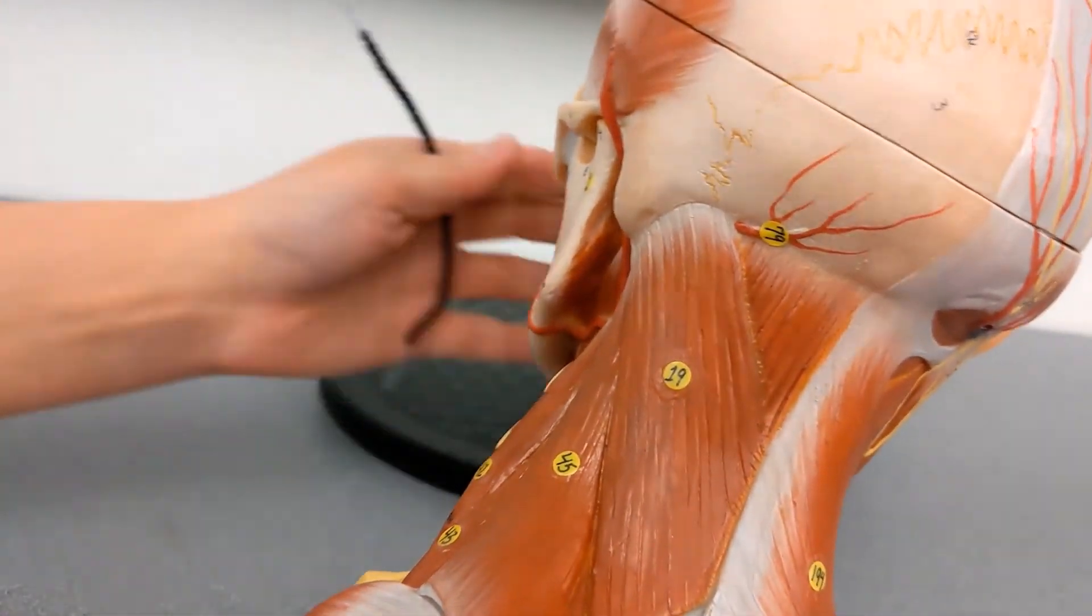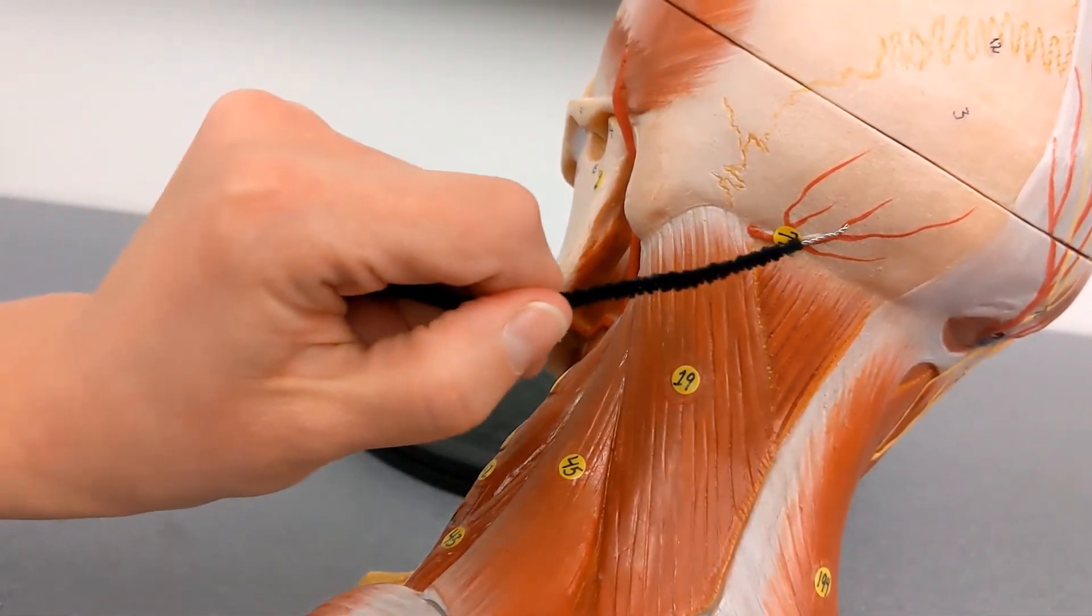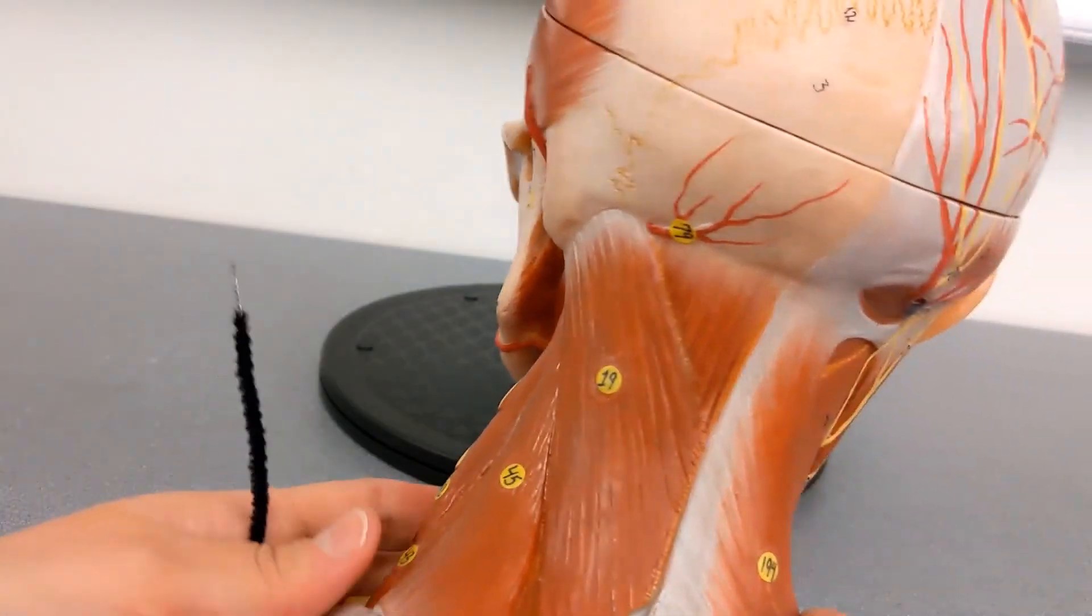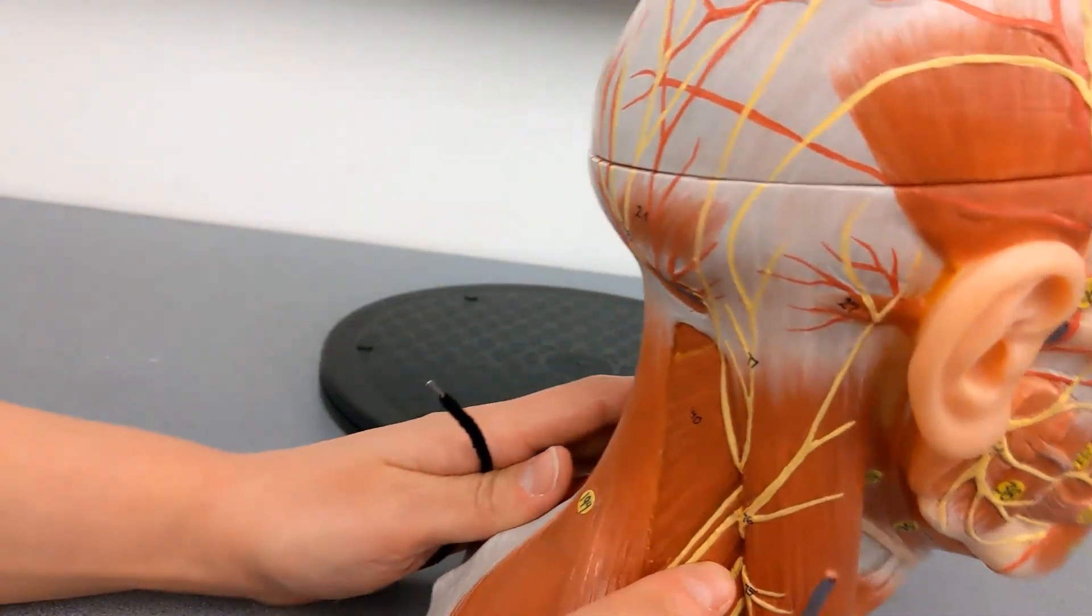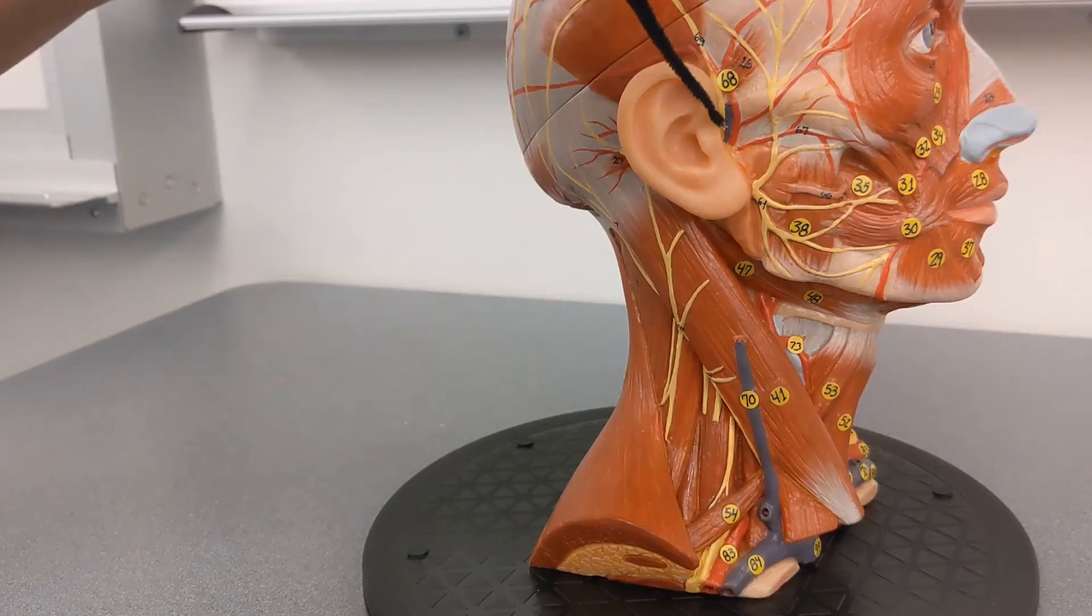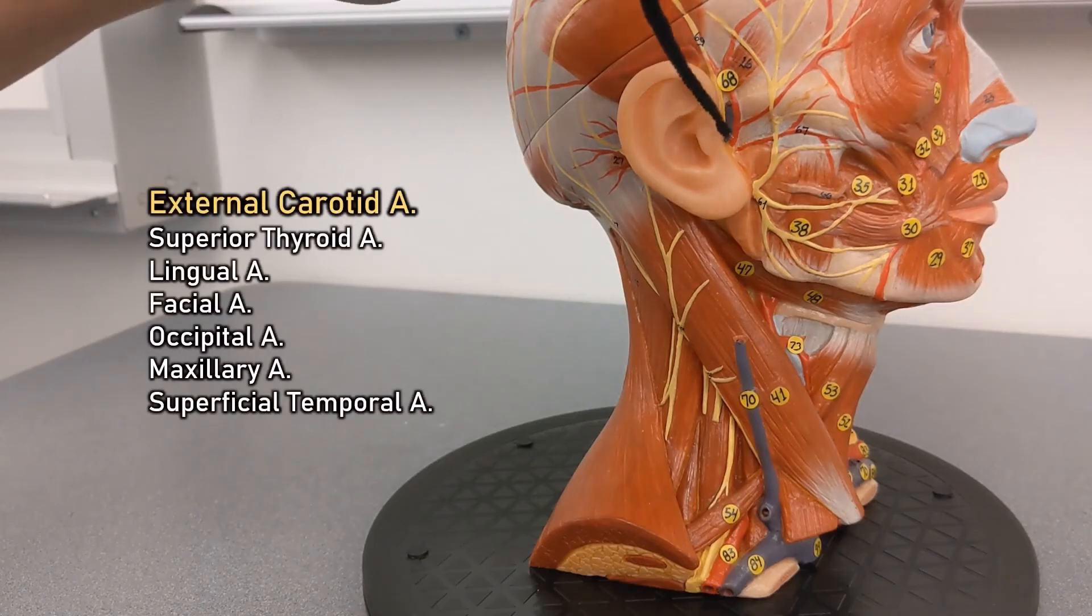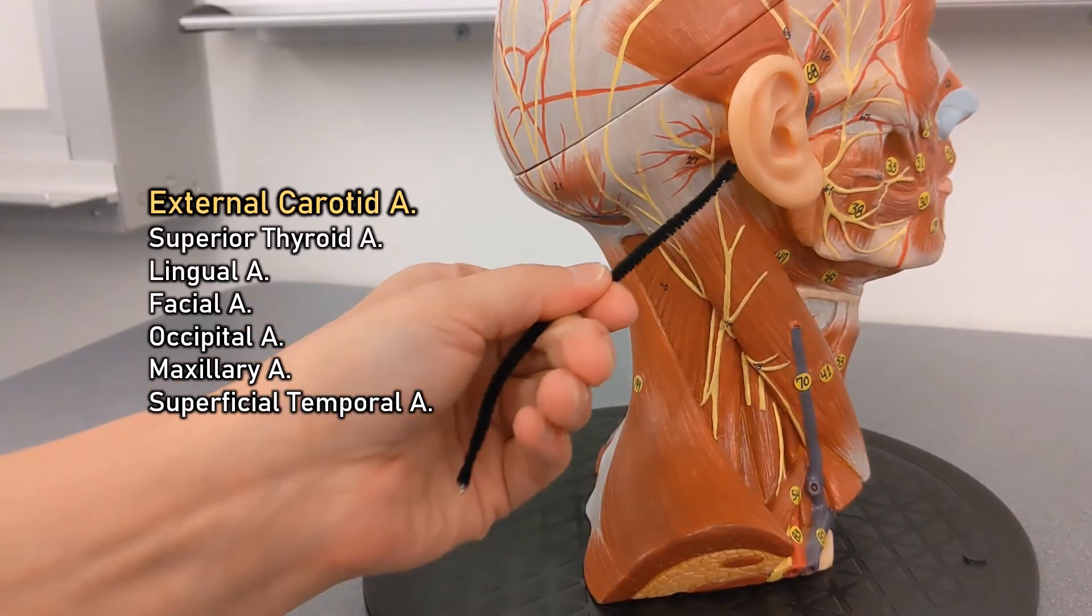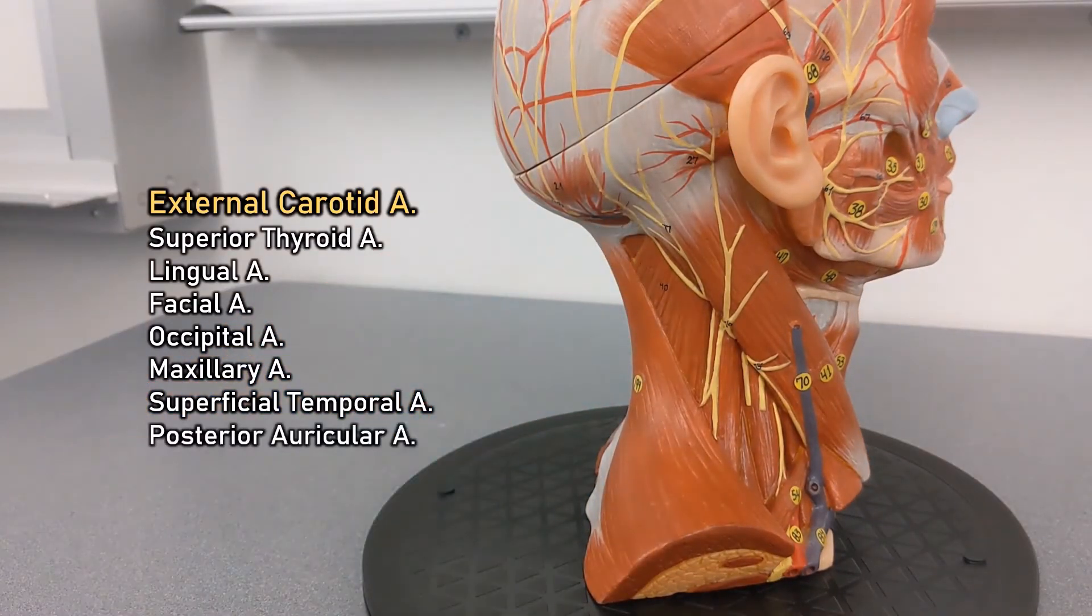You can also see part of the occipital artery there. And if we go to the other side, this is the superficial temporal artery. And then behind the ear is the posterior auricular artery because auricular means ear and it's behind the ear.